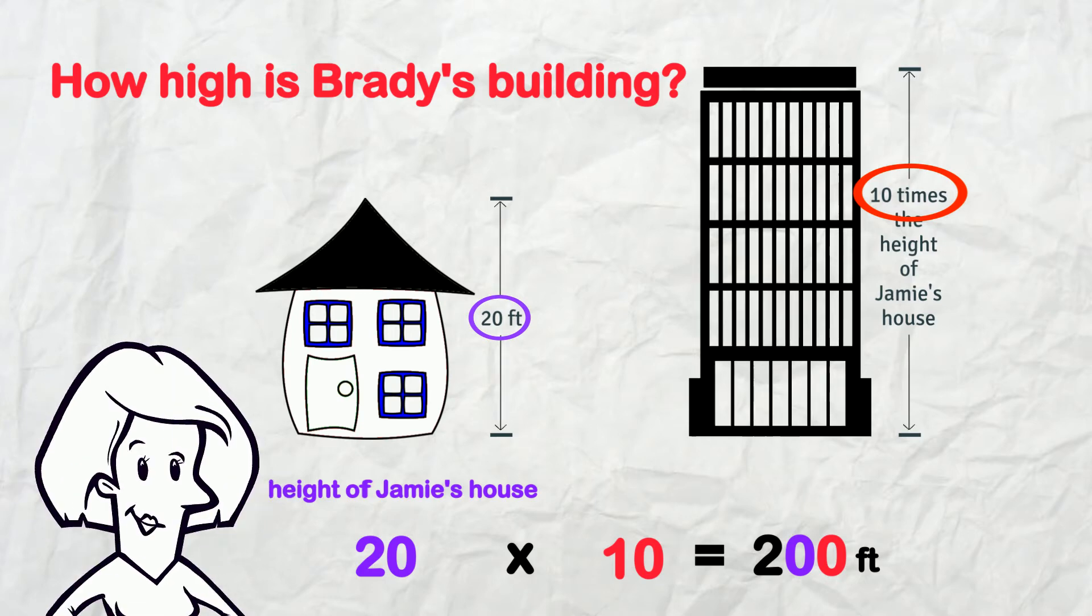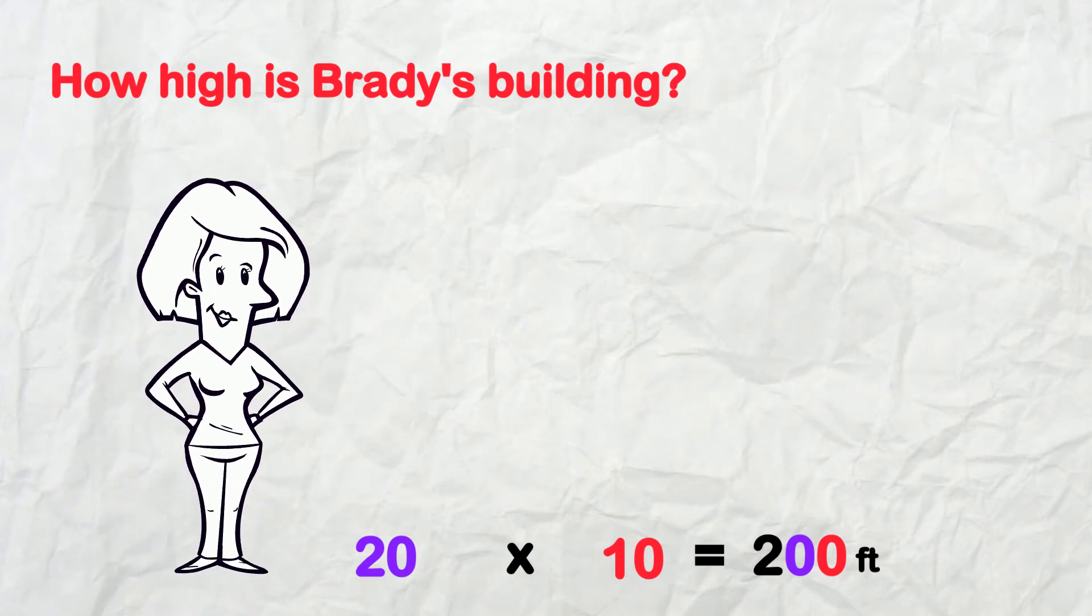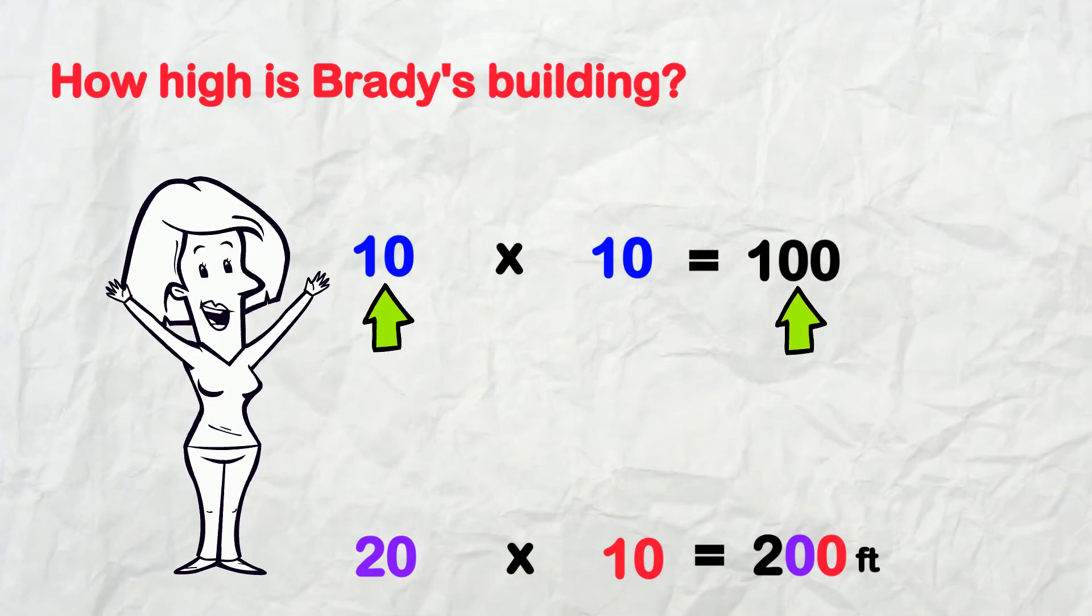Easy, right? And it makes sense! Because we know that 10 times 10 is 100. This is simply twice that amount!